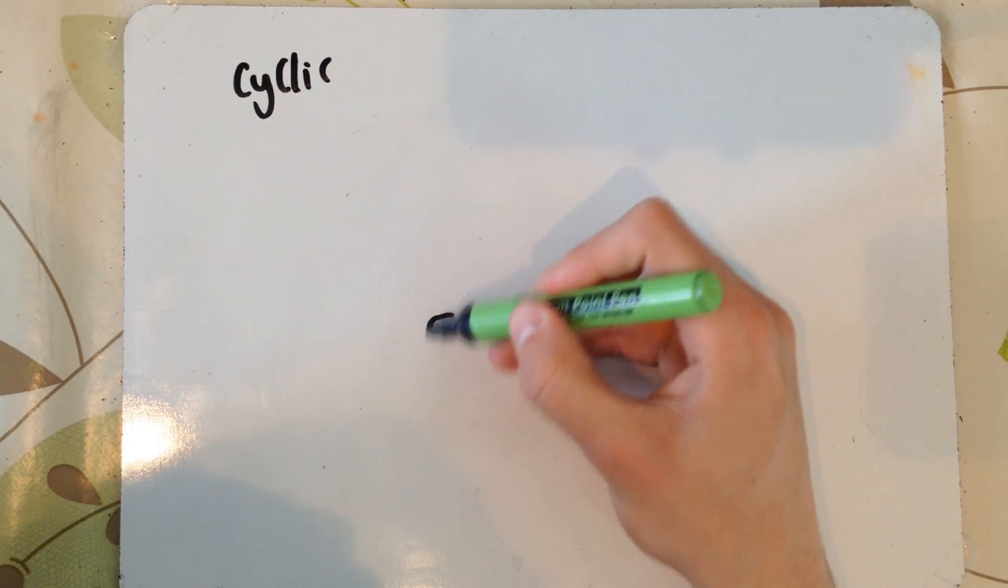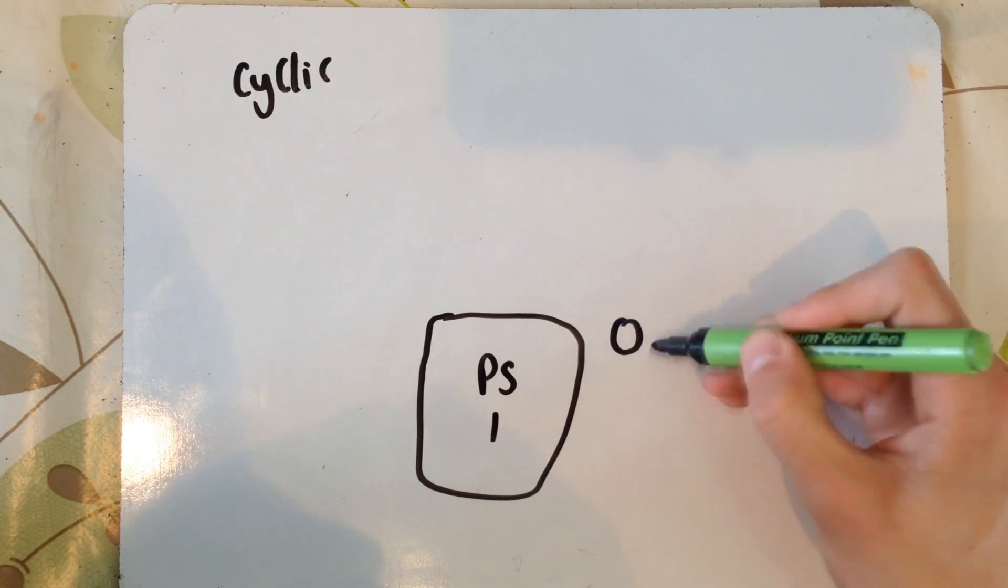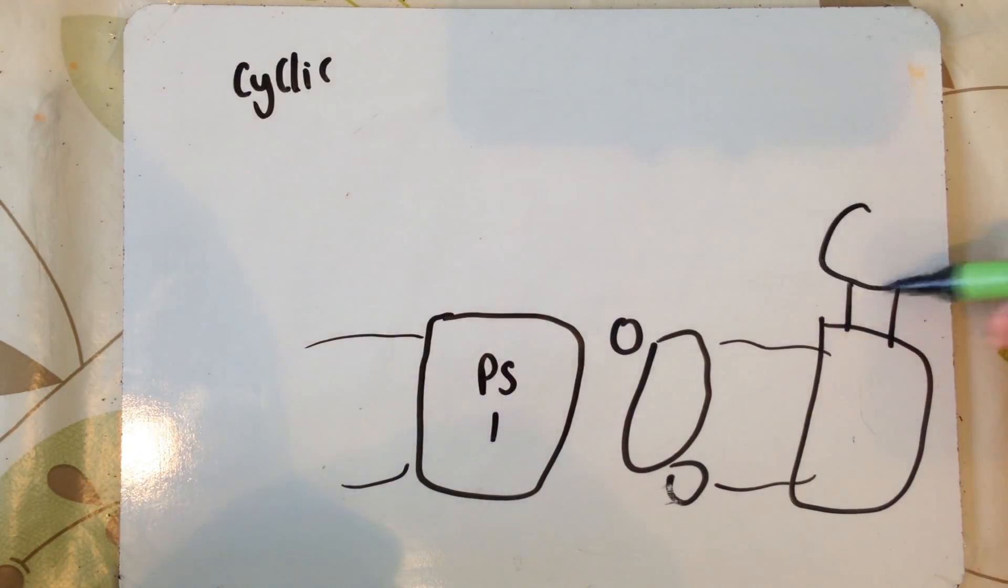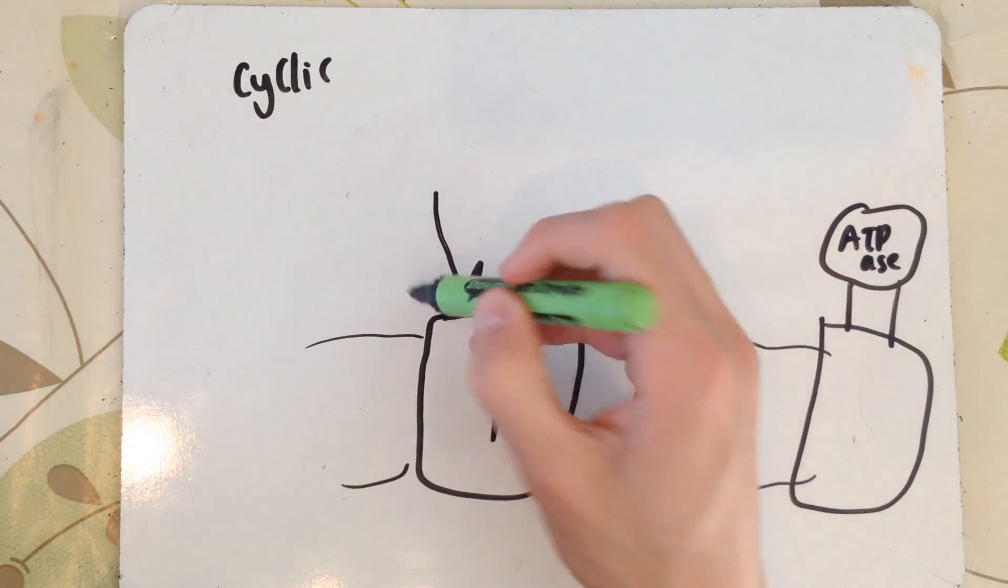This is known as non-cyclic photophosphorylation. Now cyclic photophosphorylation. Once again, I'm just drawing the basic diagram of the membrane. Cyclic photophosphorylation only really involves photosystem 1. Light strikes photosystem 1.